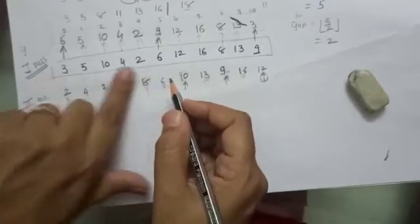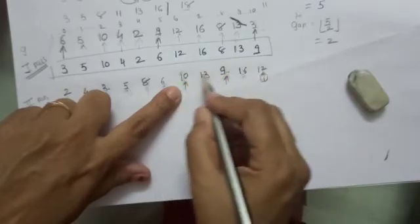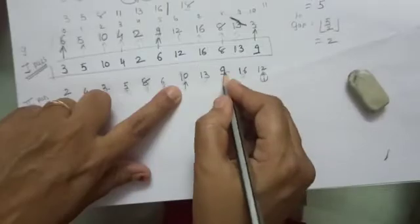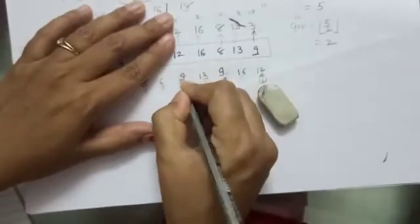So before that no need to bother, but you have to perform insertion sort on this 3, 10, 9 and 12. So 9 comes here and 10 goes there. 9 comes here and 10 comes here.